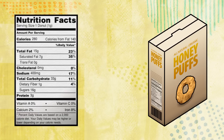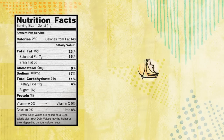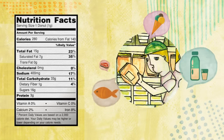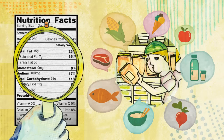Have you ever seen this kind of table on the package for your favorite snack? Do you know what it is? It is called a nutrition label. On the nutrition label, you can find a lot of information about the food you are about to eat. Can you guess what might be listed on the label? Well, let's find out.